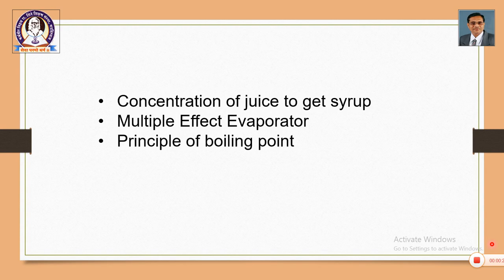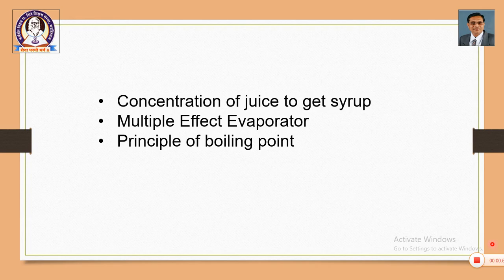In the stage of extraction, we extract the juice from the sugar cane. In the stage of clarification, we start with the raw juice to get the clear juice. In this third stage of concentration, we concentrate the juice to get syrup. We start with the clear juice and convert it into syrup, and this operation is carried out using a unit called the multiple effect evaporator.